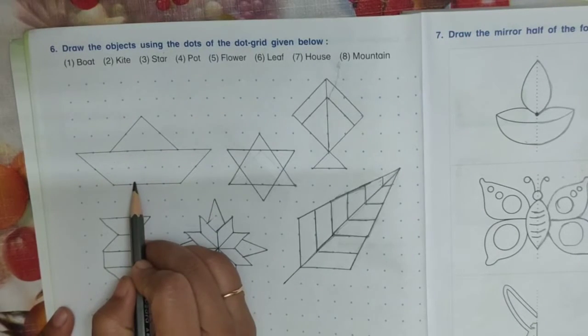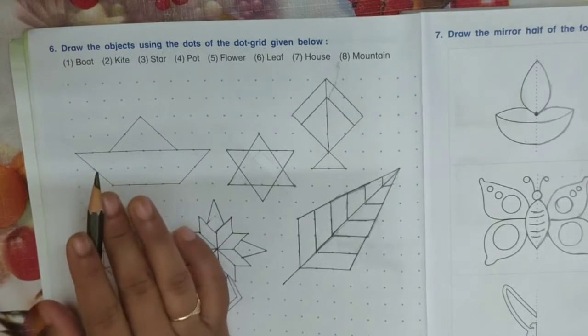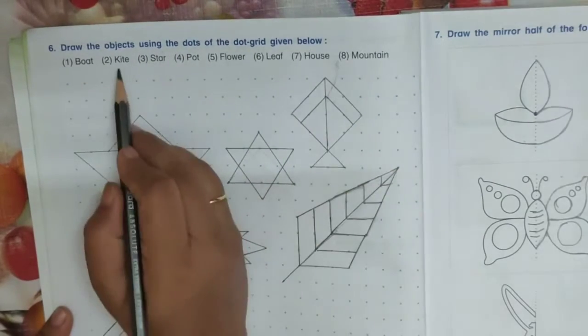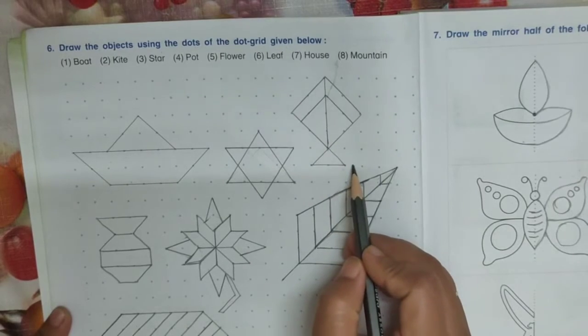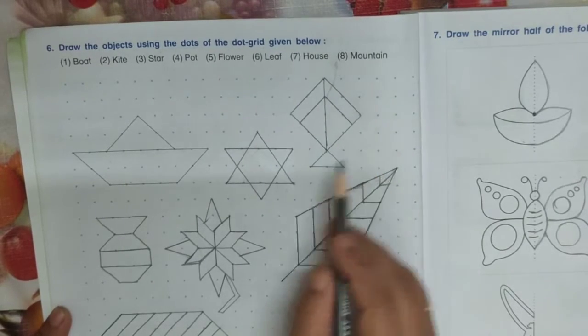Similarly, I have made other objects here. Second one is kite. Here I have made the drawing of kite. Similarly, star.